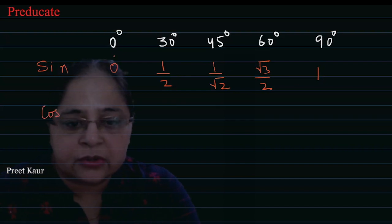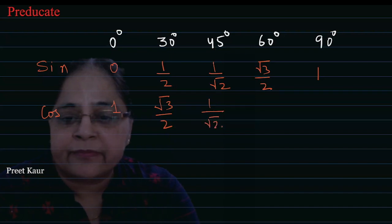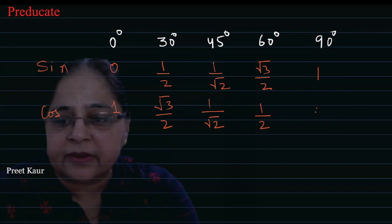Then cos 0 degree is 1. This is the reverse. Cos 30 degree is root 3 by 2, and cos 45 degree is the same, 1 by root 2, and 60 degree is 1 by 2, and 90 degree is 0.